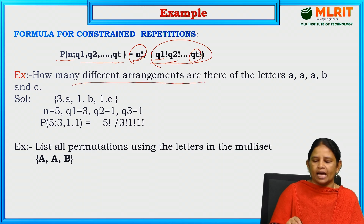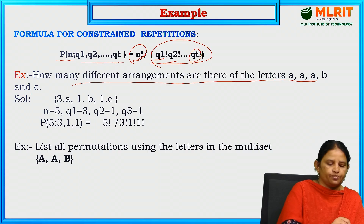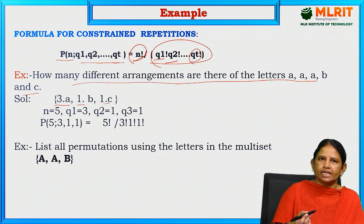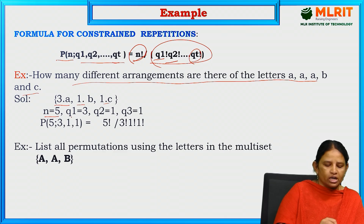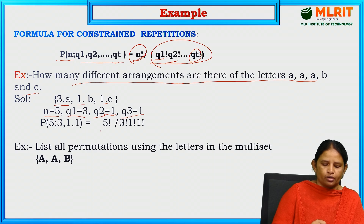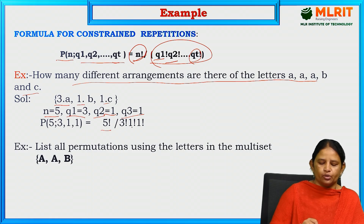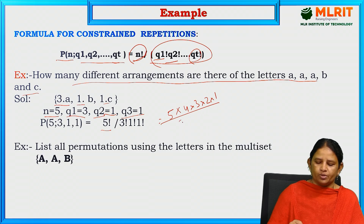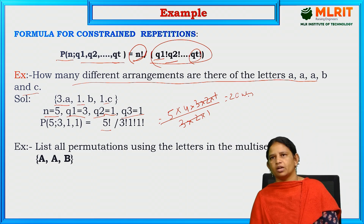For example, how many different arrangements are there of the letters A, A, A, B, C? That is a total 3 A's, 1 B, 1 C. Total number of letters N equals 5. Q1 is the first letter repeated 3 times. Q2: B is repeated 1 time and C is repeated 1 time. So the formula gives P(5; 3, 1, 1) = 5 factorial divided by 3 factorial times 1 factorial times 1 factorial = 5×4×3×2×1 divided by 3×2×1 = 20 ways.